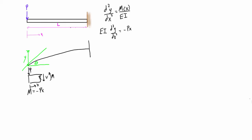Before we continue, we should identify our boundary conditions. We have two boundary conditions. At X equals L, Y is going to be equal to zero — there will be no deflection there because the wall is staying put; this is a rigid connection. And also at X equals L, theta is going to be equal to zero, because this is a rigid connection and the 90-degree angle will be upheld even once the rest of the structure has been deformed.